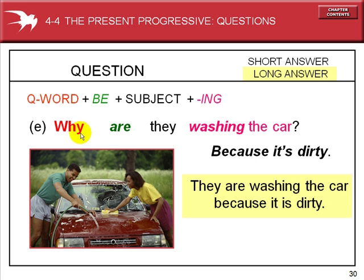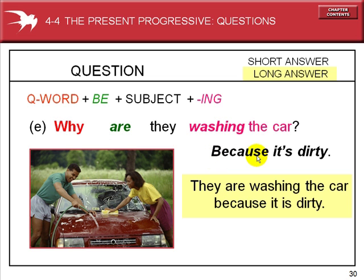The question word: why? Why are they washing the car? The question word comes first, then the form of the verb to be. The subject is 'they' — two people — then the ing ending to the verb, and 'the car.' Short answer: Because it's dirty. When a question is asked with 'why,' it is answered with 'because.' Long answer: They are washing the car because it's dirty — because it is dirty.